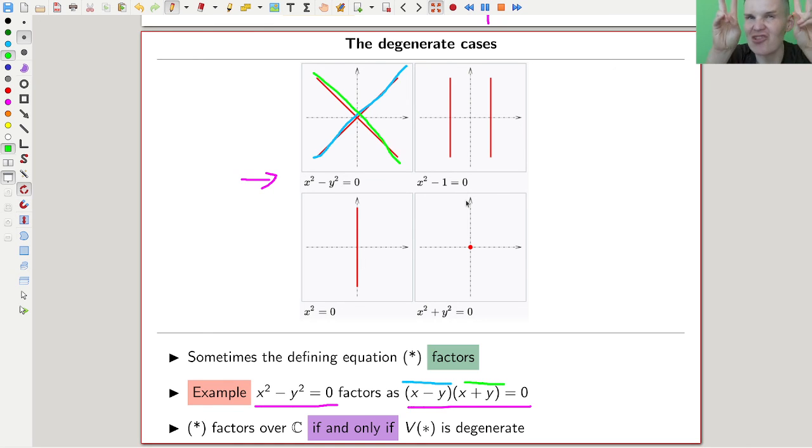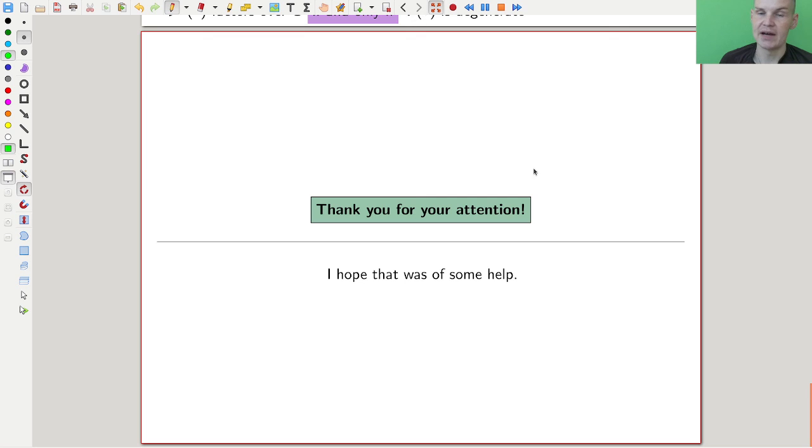And this is an if and only if. So the degenerate cases are the ones that factor. And this gives us an idea how to define later what degenerate should be. It should be some kind of factoring property of a polynomial. And the whole idea of algebraic geometry eventually will be, put the geometric kind of properties into algebraic terms, because algebra is like easier than geometry. And we are trying to understand geometry by algebra. Anyway, I hope you enjoyed this video, and I also hope to see you next time.